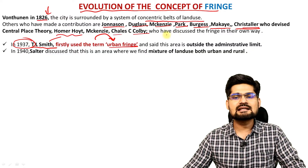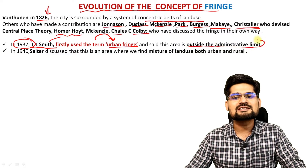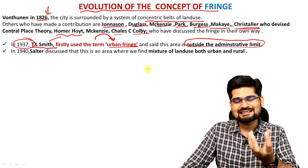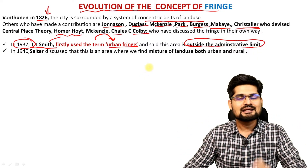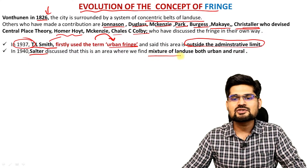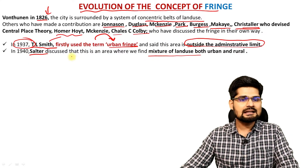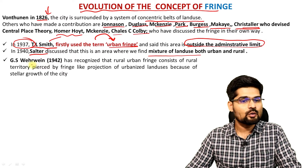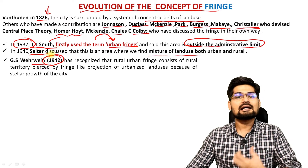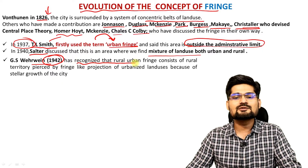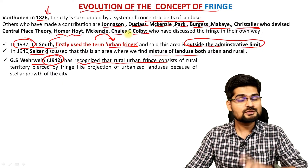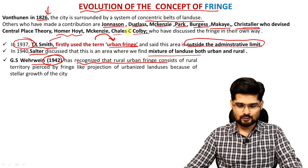T.L. Smith defined it as an area outside the administrative limit — just outside the main municipality or administrative unit of the city. Then Salter came in and said it's a mixture of land use both urban and rural, in 1940. Then we have Verwin in 1942 who made a lot of work and diagrams related to it, and he recognized the rural urban fringe as a very unique entity. Verwin's work is very important in this regard.